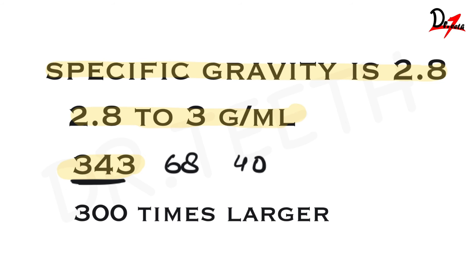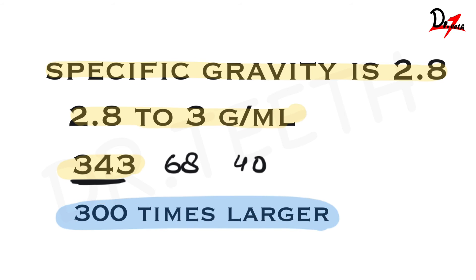Also, if you compare the hydroxyapatite crystals of enamel, they are 300 times larger than the hydroxyapatite crystals of dentine. With that, we have covered the physical properties of enamel. In the next video, we'll be covering the chemical properties. I'll be covering the entire syllabus of dental histology bit by bit in the coming months, so please keep me motivated by commenting and sharing this video with your friends. That's it for now — I will see you in the next video. Take care.